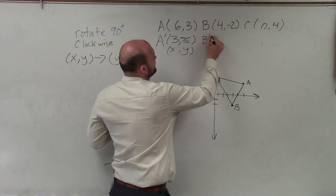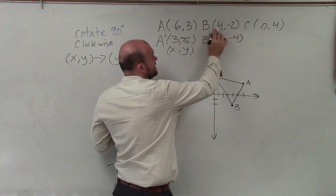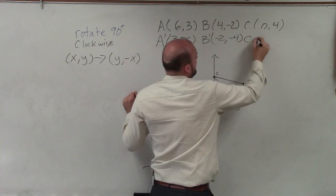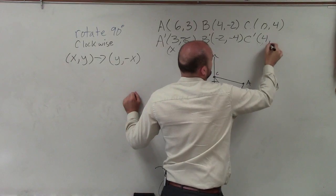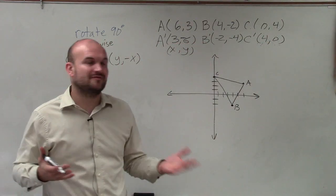So to do B prime, I'm going to swap negative 2. Now that's negative 4. Because remember, once you swap them, you have to take the opposite. And then C prime is going to be 4 comma 0. We can't take the opposite of 0. Zero is not positive or negative.